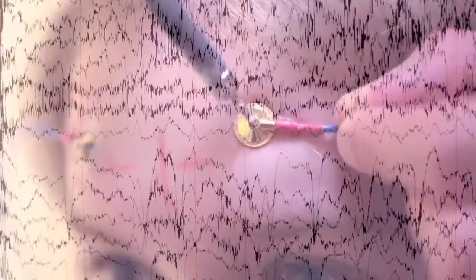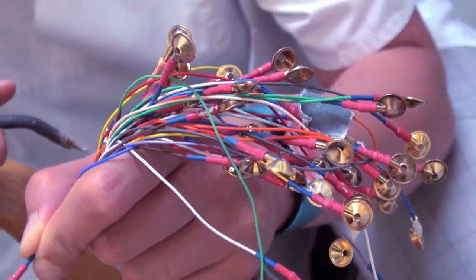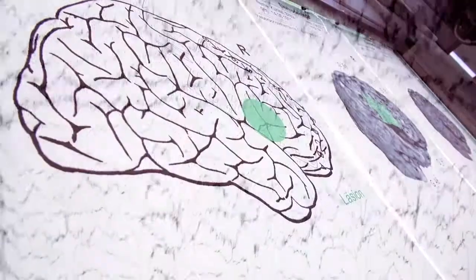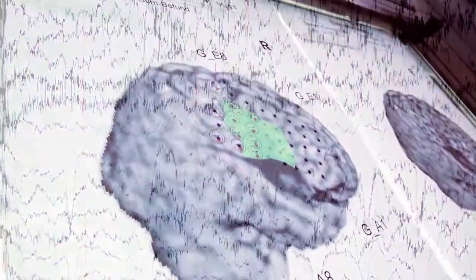In complicated cases, electrodes can be placed directly on the brain. This allows a very precise delineation of the epileptogenic area and a tailored subsequent operation.